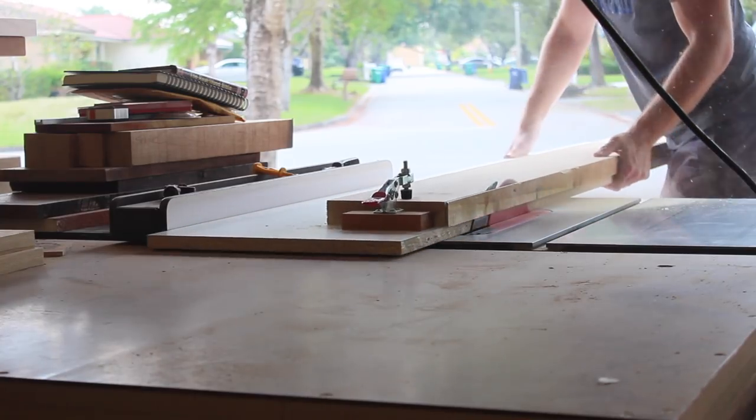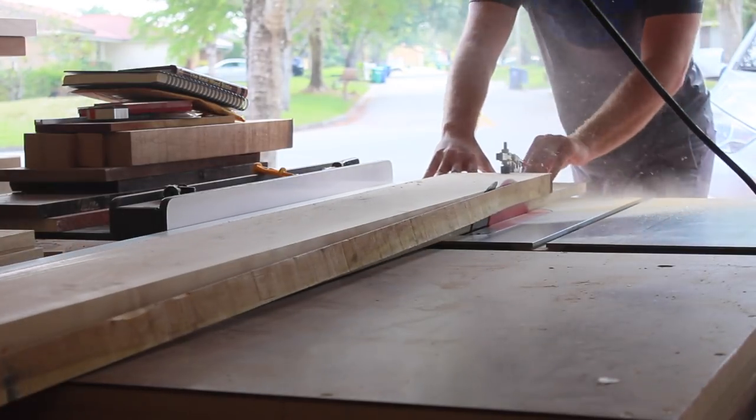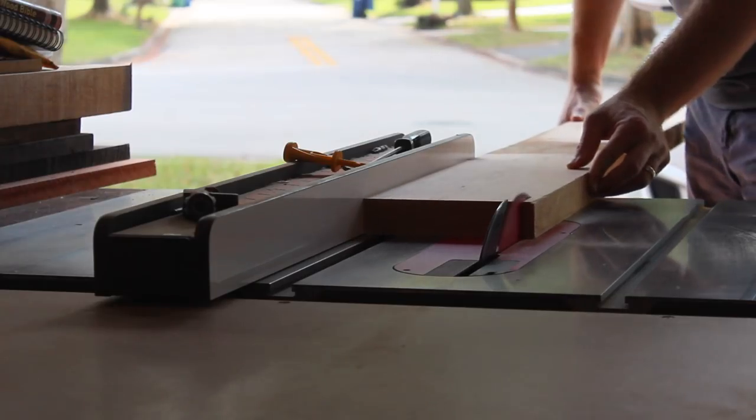Having a joining jig this big is a bit cumbersome to use, so I think if I use this method again, I'll add a runner that works into the miter slot so that I can prevent any of the sideways movement I was getting.